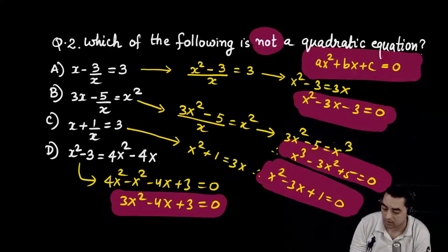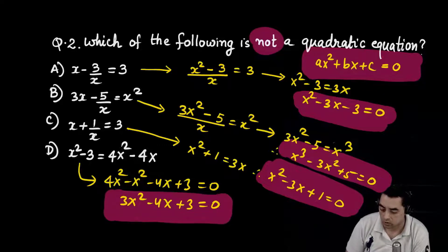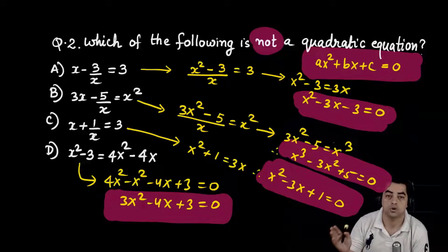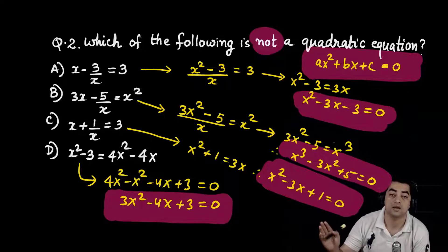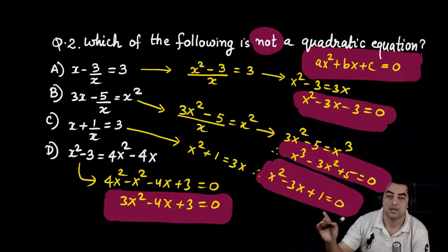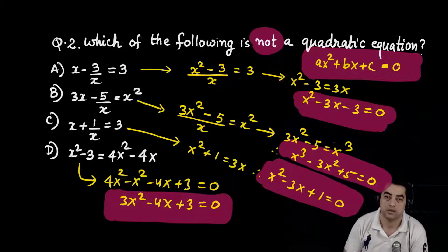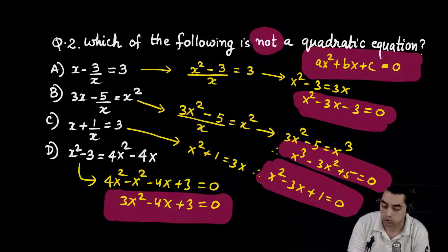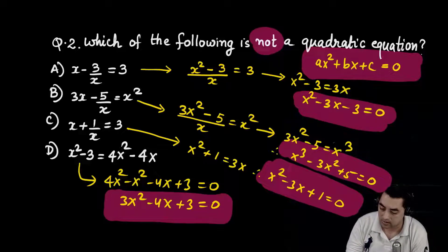Option C simplifies to x² - 3x + 1 = 0, which is in ax² + bx + c form. Option D simplifies to 3x² - 4x + 3 = 0, clearly a quadratic equation in ax² + bx + c form. Out of all 4 options, the correct answer is option B — it is NOT a quadratic equation.